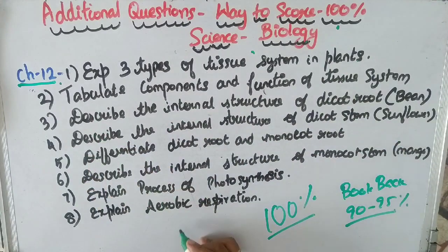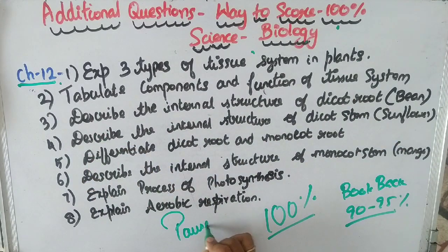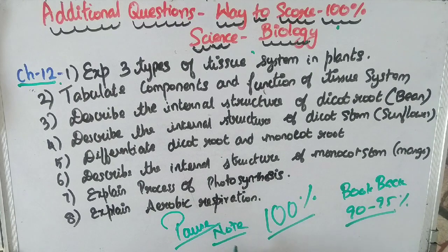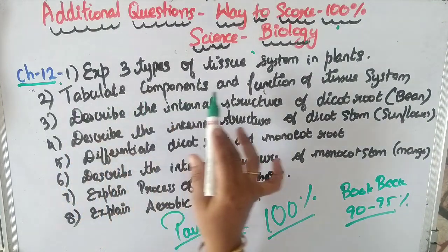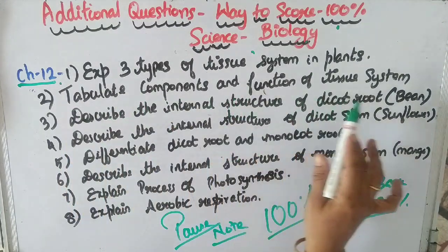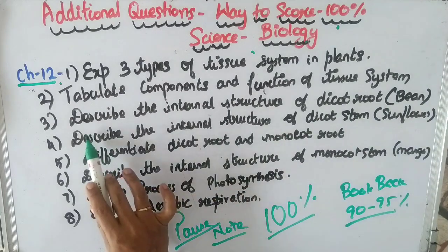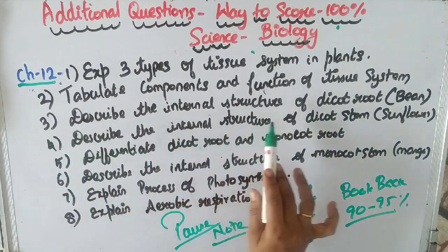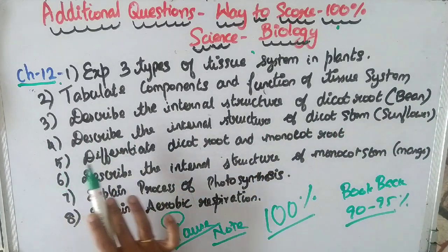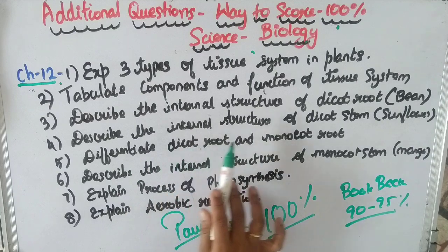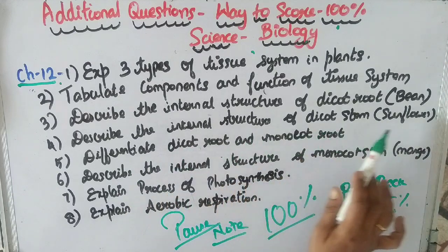Question 1: Explain 3 types of tissue system. Question 2: Tabulate components and functions of tissue system. Question 3: Describe the internal structure of dicot root bean. Question 4: Describe the internal structure of dicot stem sunflower.